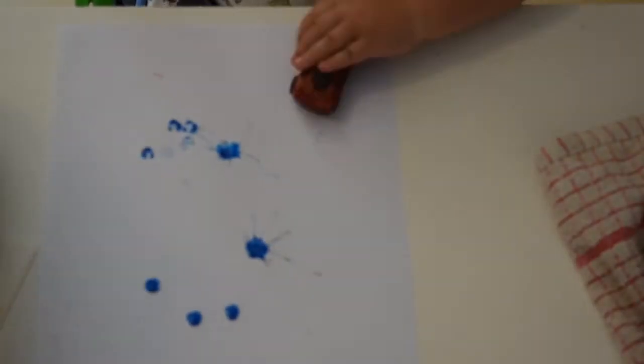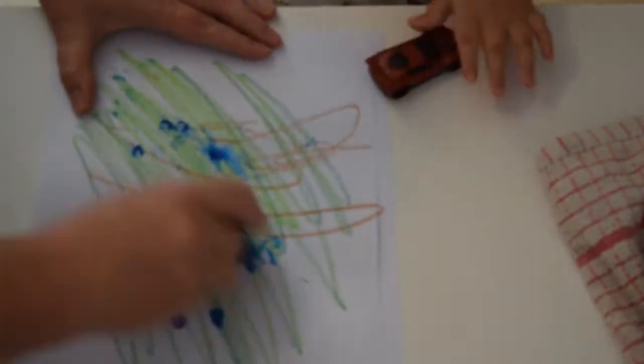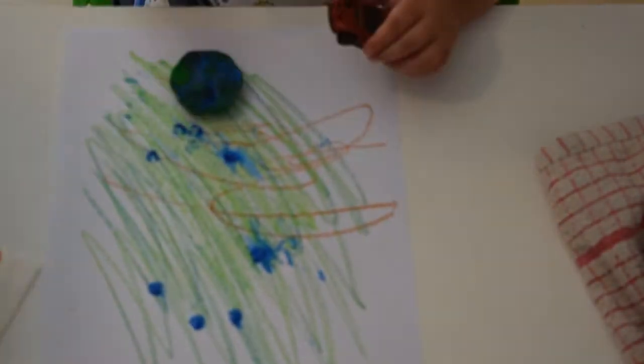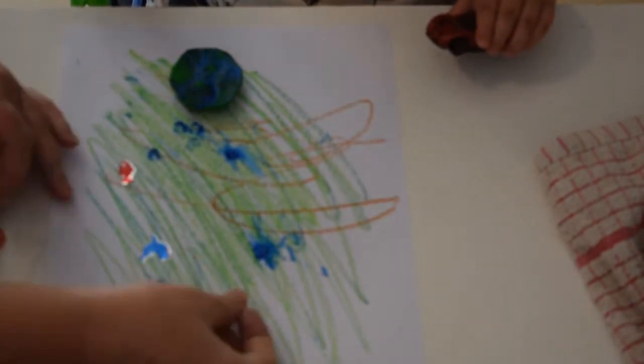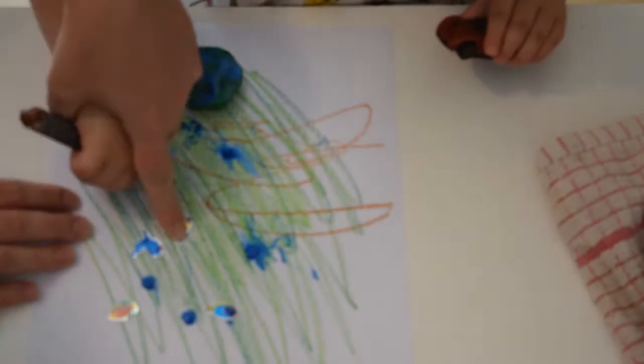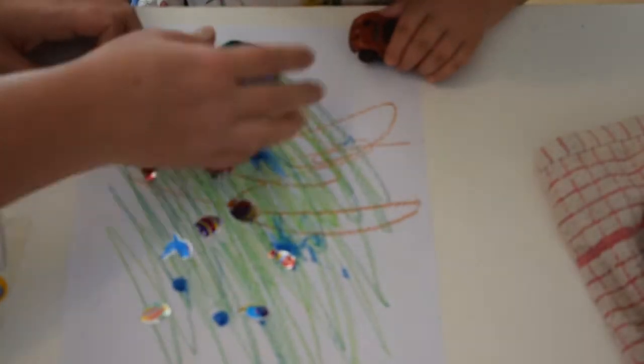Another fun thing to do is to cover a page in colors and then stick stickers on top as an environment that you created. So we did the ocean and some sea creatures, but you could do grass and some flowers on top, or you could do different fruit stickers, whatever you have available.